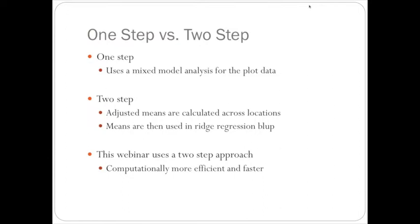So, just a quick overview of genomic selection. There's either a one-step or a two-step process. I'll be using the two-step process. The two-step process uses the adjusted means calculated across locations, and then these means are then used for ridge regression BLUP, while the one-step process uses the mixed model analysis for the plot data. So, I'm using the two-step approach since the dataset only has one location, so there really aren't means that need to be adjusted across locations, and this is also computationally more efficient and faster.